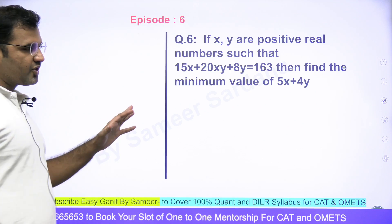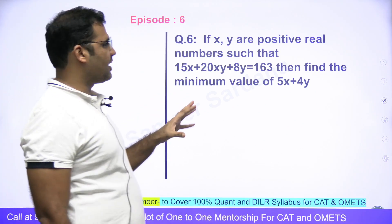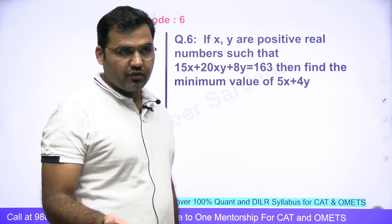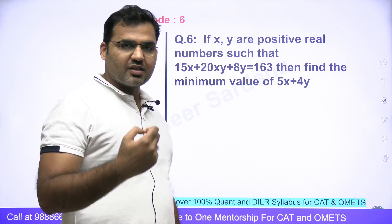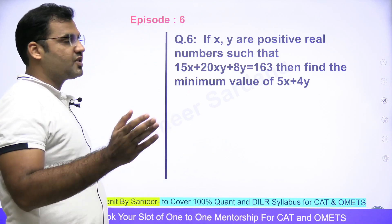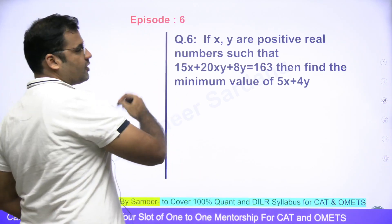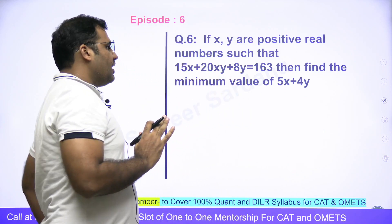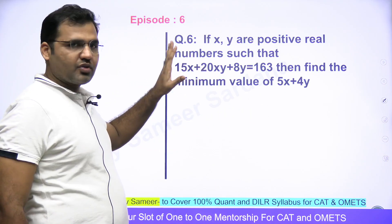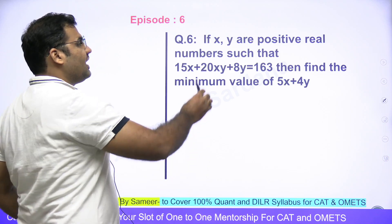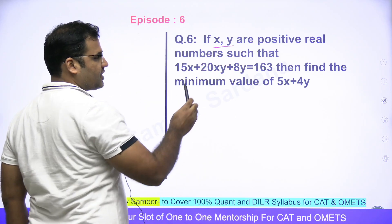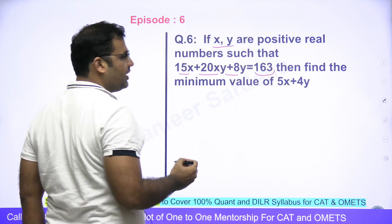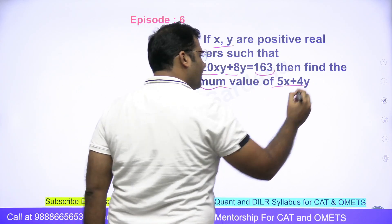Let's see, before you watch the solution guys, attempt to do it so that you have an idea of what concepts you are not aware of and what is the error in your calculations or concepts. This requires an amazing logic to solve this question. It says x and y are positive real numbers such that 15x+20xy+8y=163, then find the minimum value of 5x+4y.